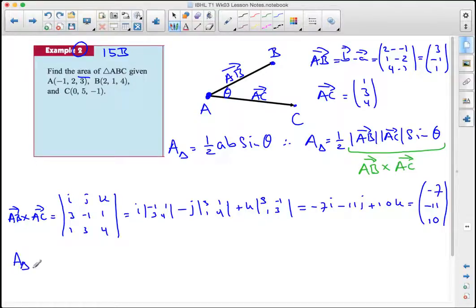So the area of the triangle is one half times the length of that vector, which is 49 plus 121 plus 100. So it's one half times the root of 270 units squared.